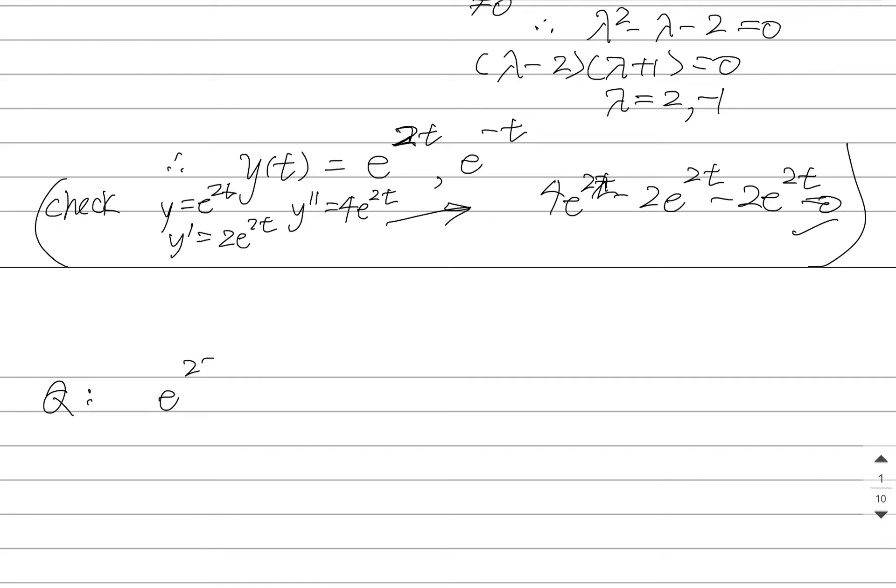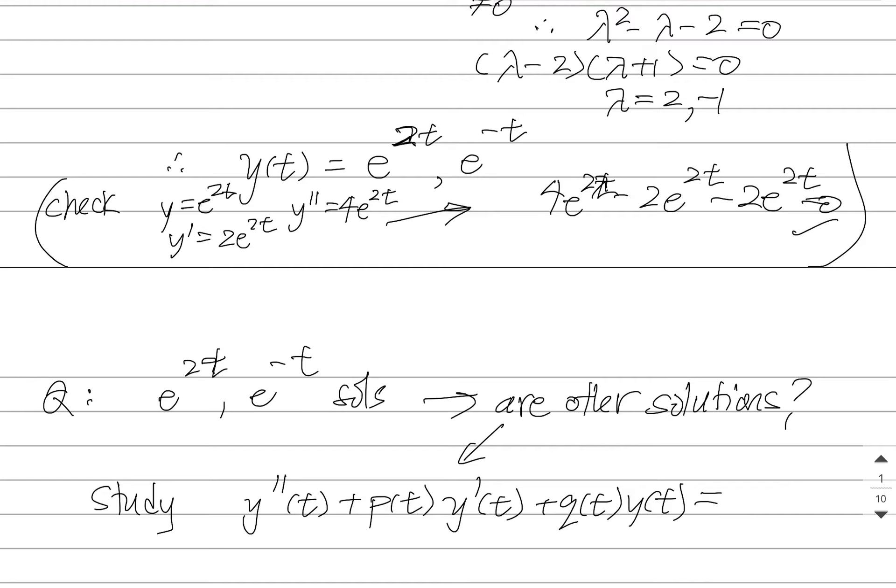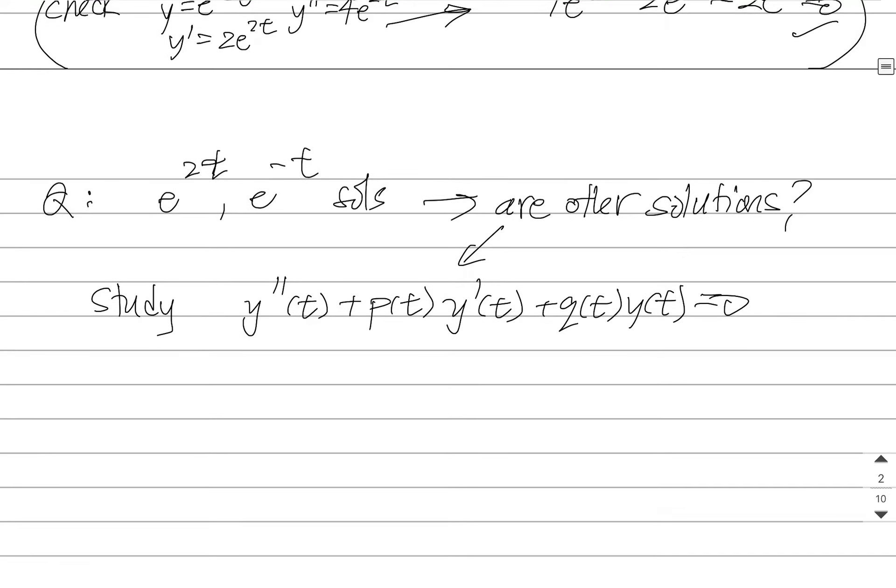If I say e to the 2t and e to the minus t are solutions, are there other solutions? Right? Did I, I just guessed. Are there any other ones? Like, did I miss something? I would like to know. So what we have to do is study this kind of differential equation and try to figure out if we missed anything. And we are going to study it by using a lot of facts from calculus and facts from linear algebra.